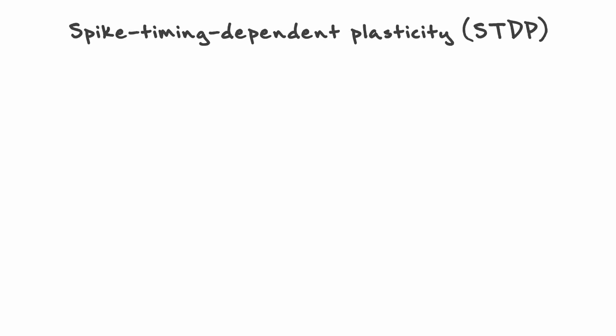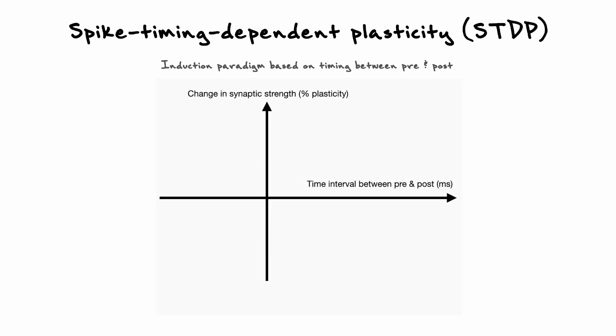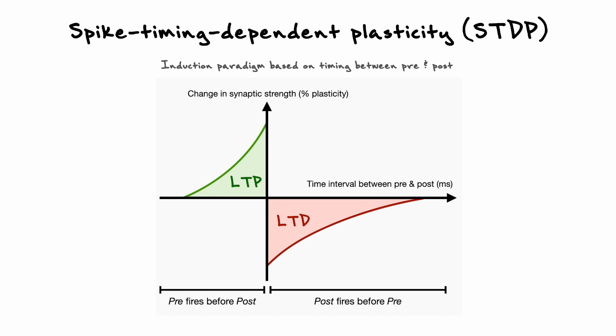Although the previous experiments in the hippocampus gave us very good insights as to how plasticity is mediated, the induction protocols are not very accurate as to what happens physiologically. Trains of spikes in the hundreds of hertz do not occur in the body, yet plasticity does happen. A more physiological way to induce plasticity is spike-timing-dependent plasticity, or STDP. In this paradigm, induction is performed by pairing a presynaptic stimulus with the firing of an action potential in the postsynaptic cell at a low frequency. The main variable is the interval of time between the two stimuli. Generally, when the presynaptic stimulus precedes the postsynaptic stimulus, it causes the connection to undergo LTP. On the other hand, if the presynaptic stimulus occurs after the postsynaptic stimulus, it leads to LTD.